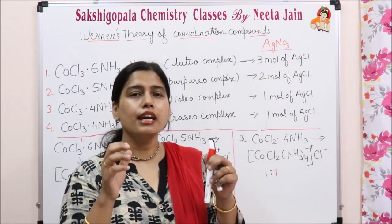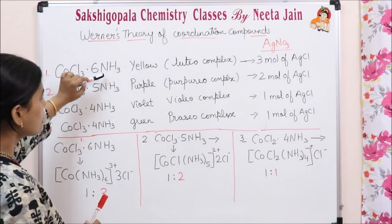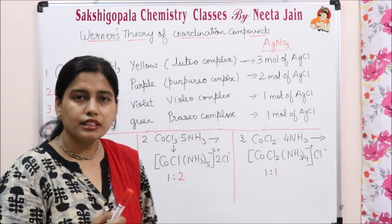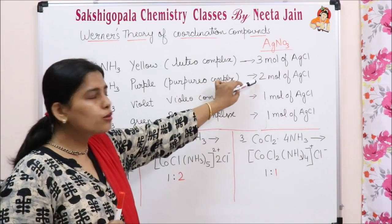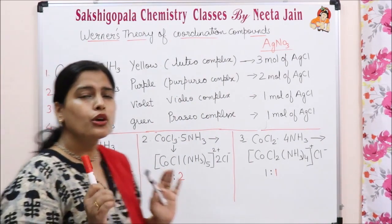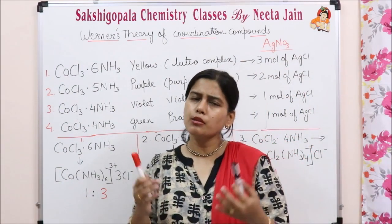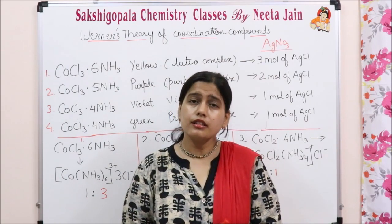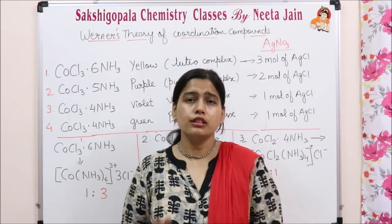Now, when we add AgNO₃ to each reaction mixture: in the first compound with 6 molecules of NH₃, 3 moles of AgCl are precipitated out. In the second compound with 5 molecules of NH₃, only 2 moles of AgCl are precipitated out. In the third and fourth categories with 4 molecules of NH₃, only 1 mole of AgCl is precipitated out. To study the properties of any complex, Werner conducted conductivity measurements of these reactions.